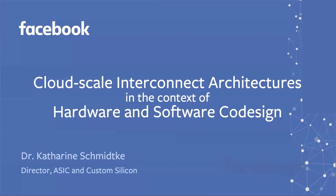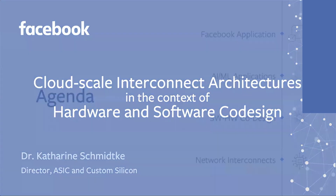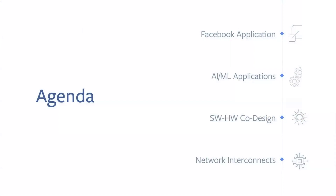Hello everyone, my name is Katherine Schmidke and today I'm going to be talking to you about cloud scale interconnect architectures in the context of hardware and software co-design. I'll start by describing the Facebook application, talk a little bit about AI and ML, and then describe the relevance of software and hardware co-design particularly for performance improvements, and then talk about network interconnects.